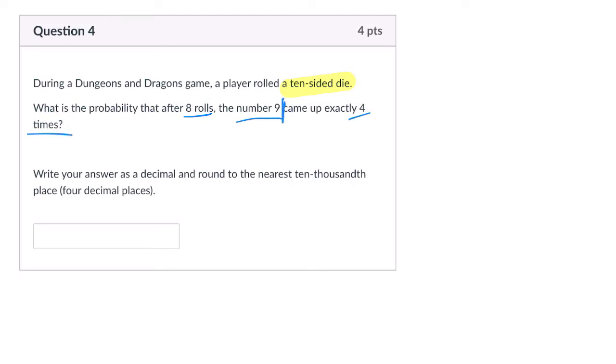Well, here, the number that's coming up is kind of irrelevant. It's just that a number on a 10-sided die came up a certain amount of times. So the probability of getting that number, or any particular number on the dice, is just 1 out of 10. And the probability of not getting that number is 9 out of 10. So that's our probability of success and our probability of failure.